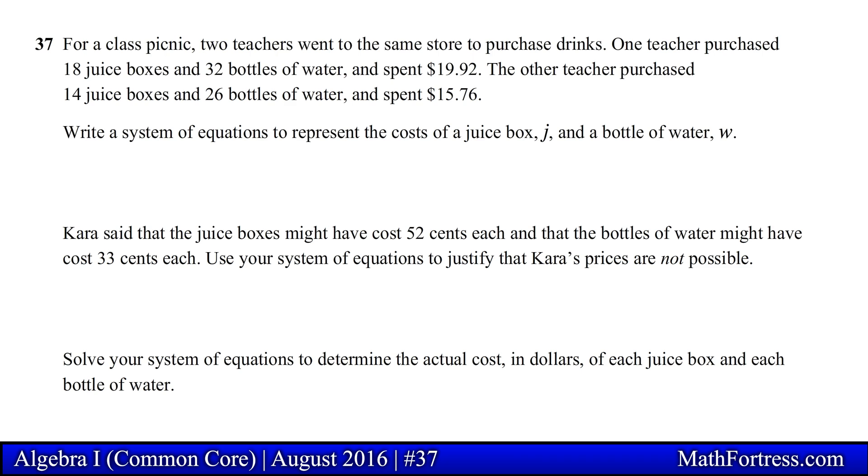Write a system of equations to represent the cost of a juice box j and a bottle of water w. Kara said that the juice boxes might have cost 52 cents each and that the bottles of water might have cost 33 cents each. Use your system of equations to justify that Kara's prices are not possible. Solve your system of equations to determine the actual cost in dollars of each juice box and each bottle of water.